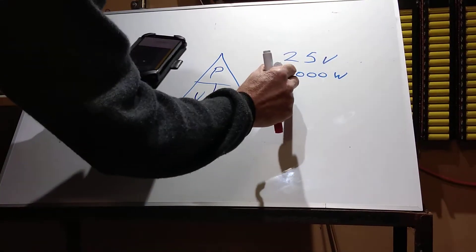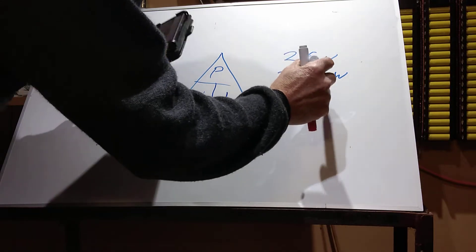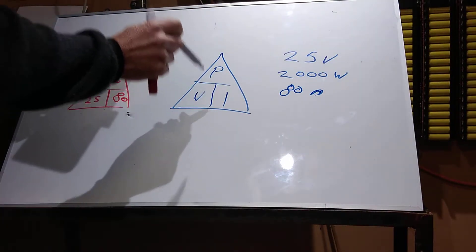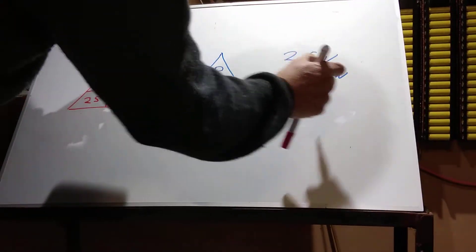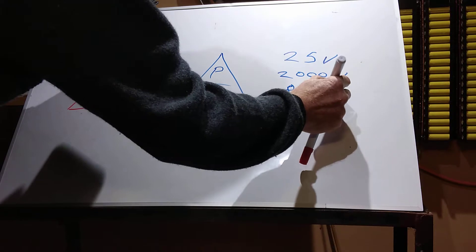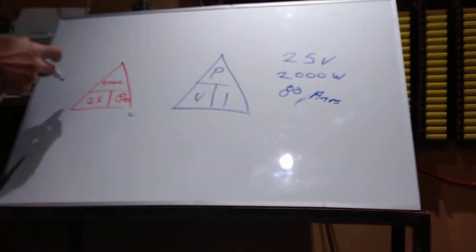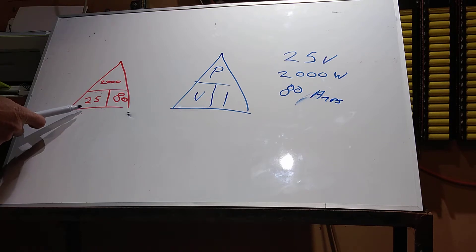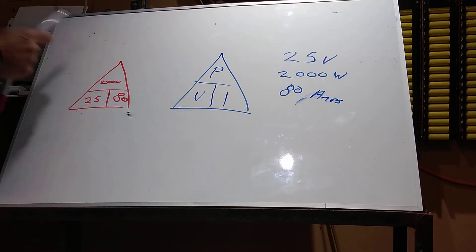So, direct relation. 80 amps. That's I. I is amps current. So that works whichever way you do it. 2,000 divided by 80 amps is 25 volts. Or 25 volts times 80 is 2,000.